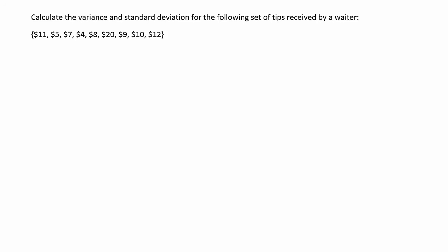Calculate the variance and standard deviation for the following set of tips received by a waiter. All right, so the way we're going to calculate standard deviation and variance is to start by calculating the variance, and then to get the standard deviation from there, we will just take the square root because remember the connection between variance and standard deviation is that if you take the square root of variance, you end up with standard deviation.